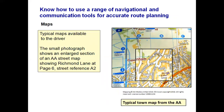Typical maps available to drivers include street maps. A small excerpt from an AA street map shows Richmond Lane on page six with street reference A2. You would look where column A meets line 2 to find Richmond Lane. You will find these addresses in the index at the rear of the map book, which also applies to road atlases and UK maps.